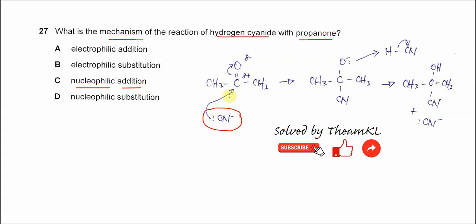After this cyanide is added and is followed by the H, so HCN is added to the propanone. This mechanism we call nucleophilic addition.